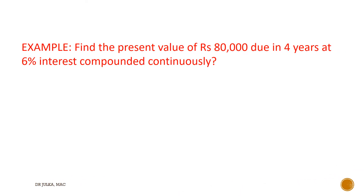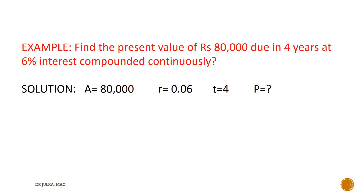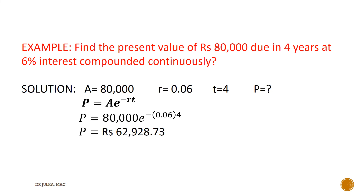Now some examples on present value. In this example, we want to find the present value of ₹80,000 due in 4 years at 6% interest compounded continuously. Here A equals ₹80,000, R equals 0.06, and T equals 4 years. When interest is compounded continuously, the formula for present value is P equals A multiplied by E raised to the power minus RT. Putting A equals 80,000, R equals 0.06, and T equals 4, using a simple calculator we get the present value of ₹62,928.73.